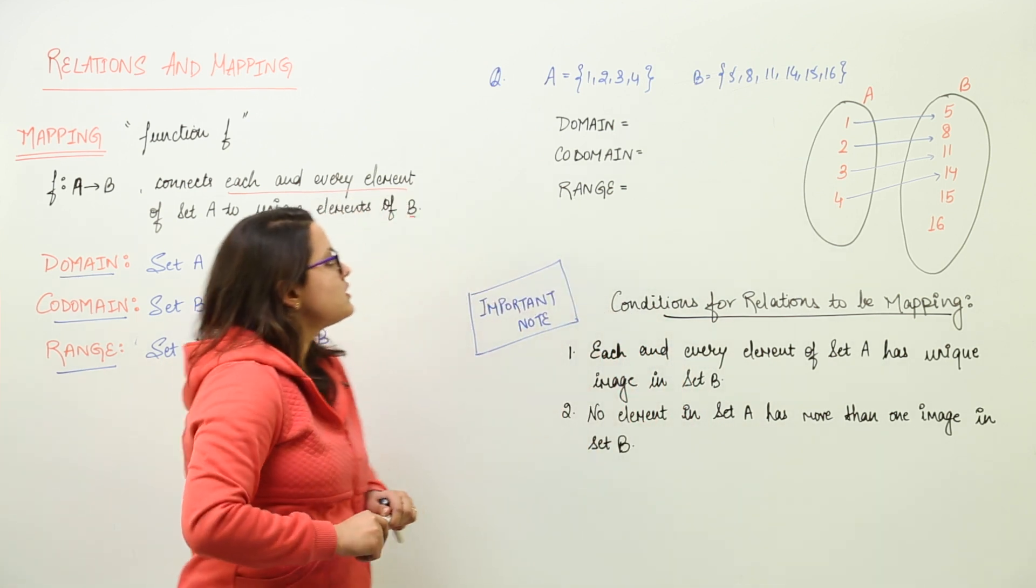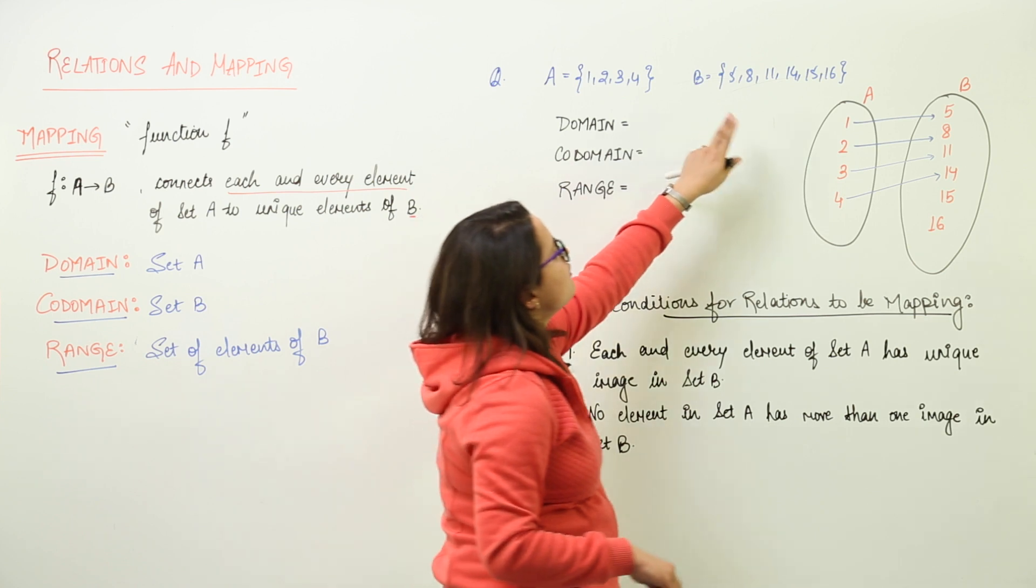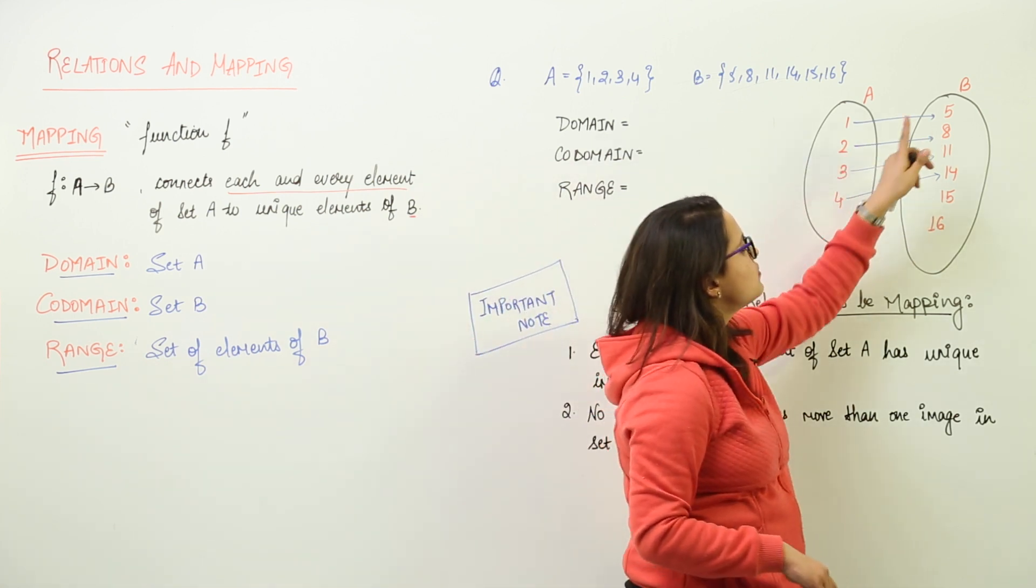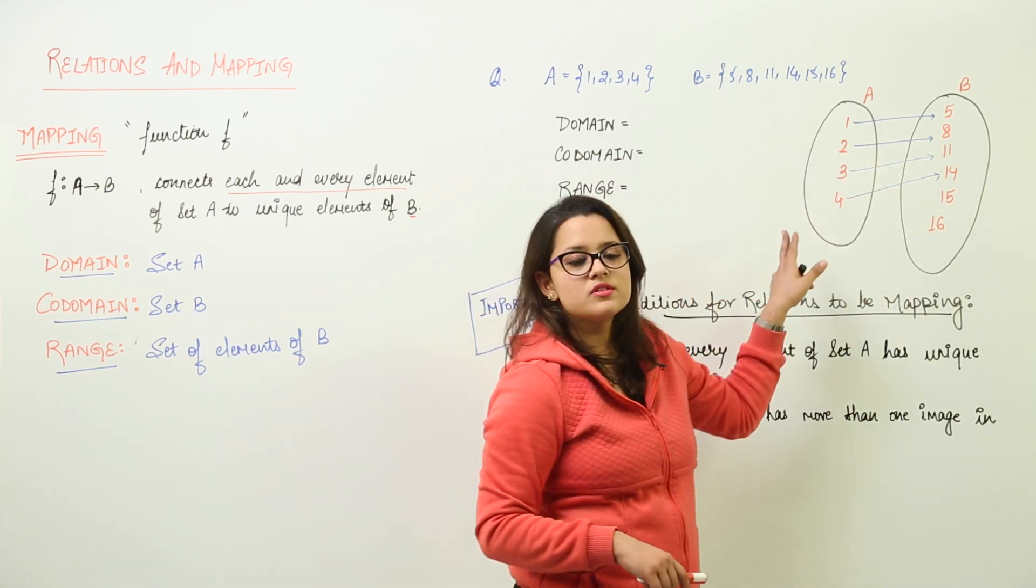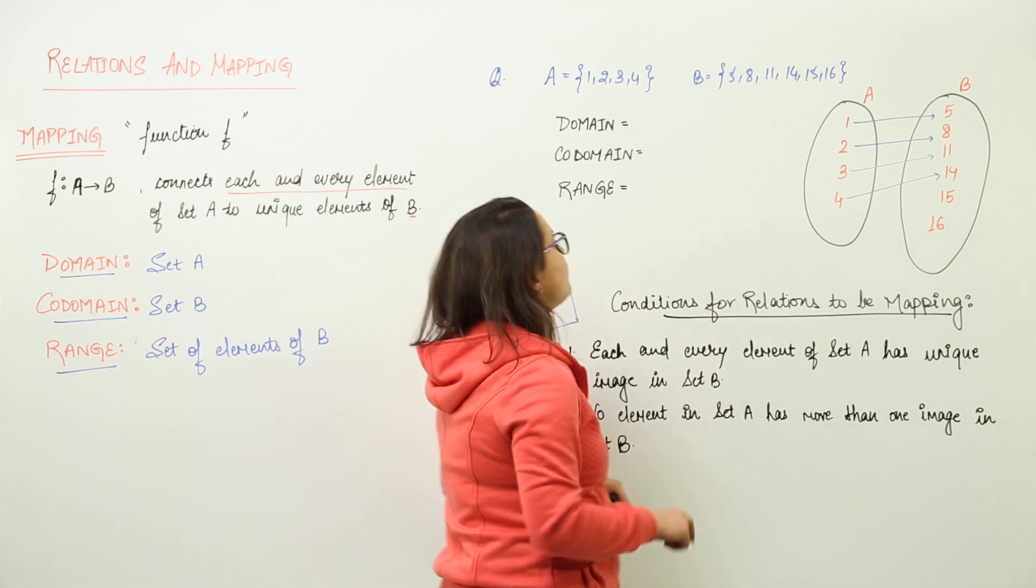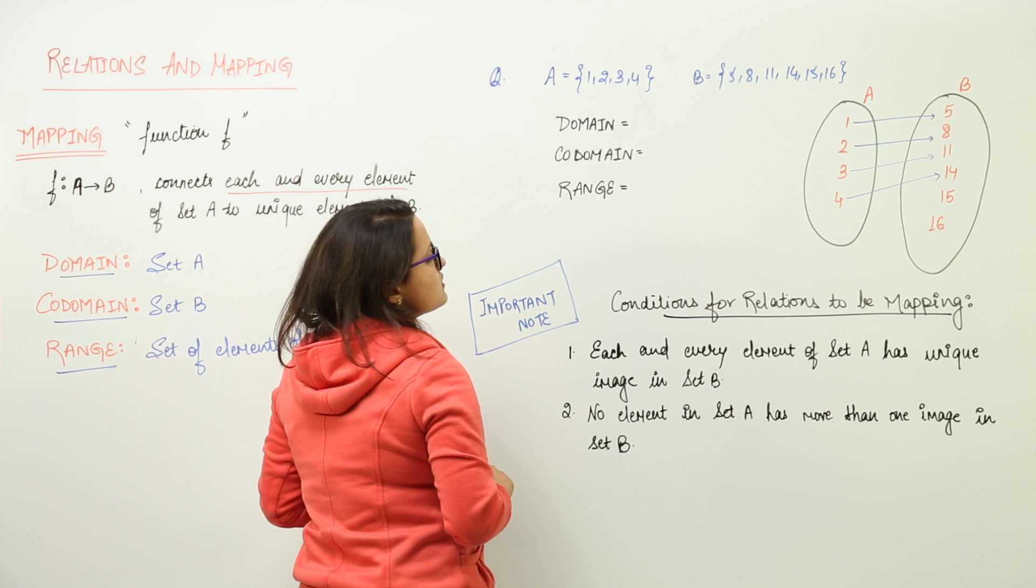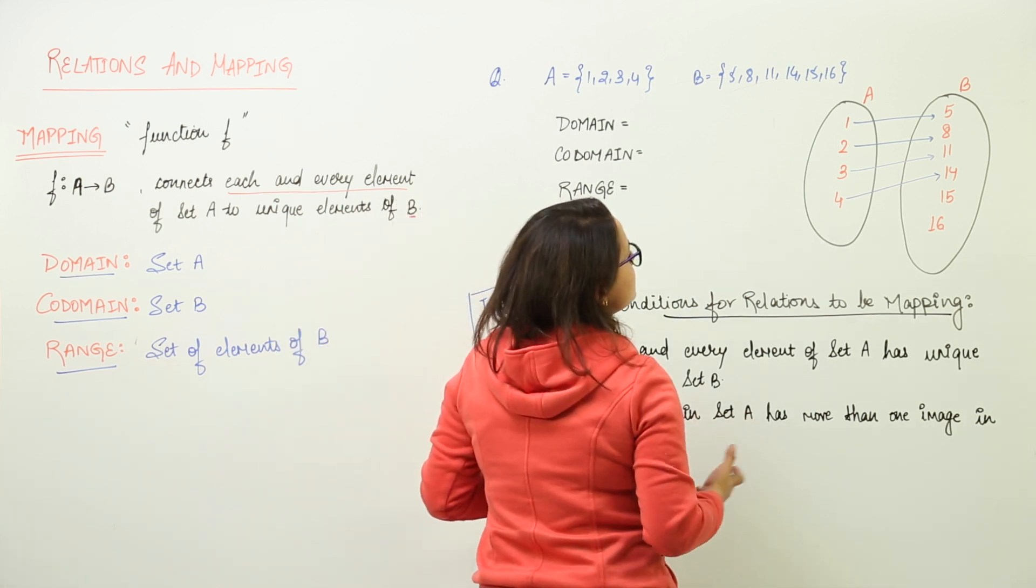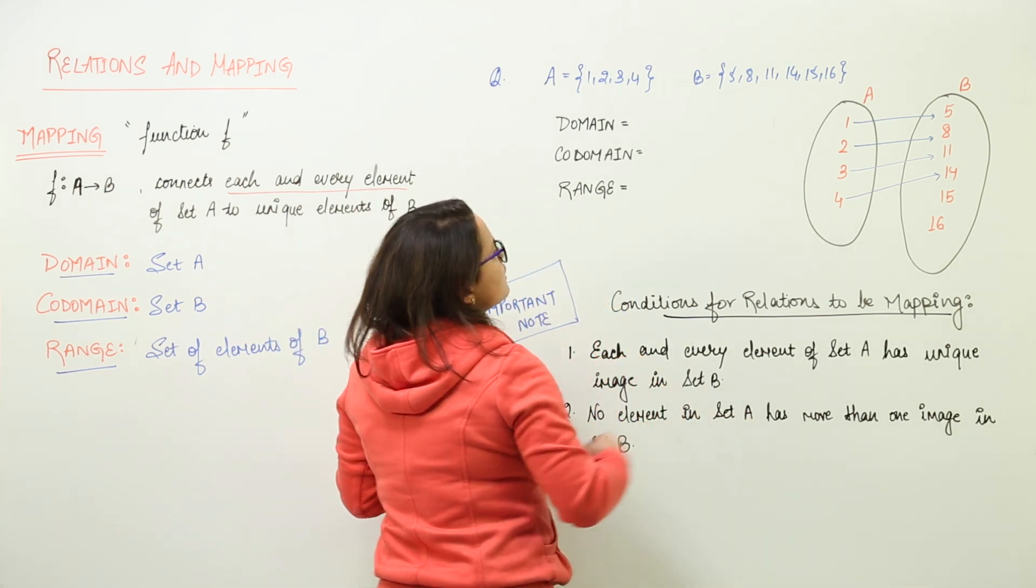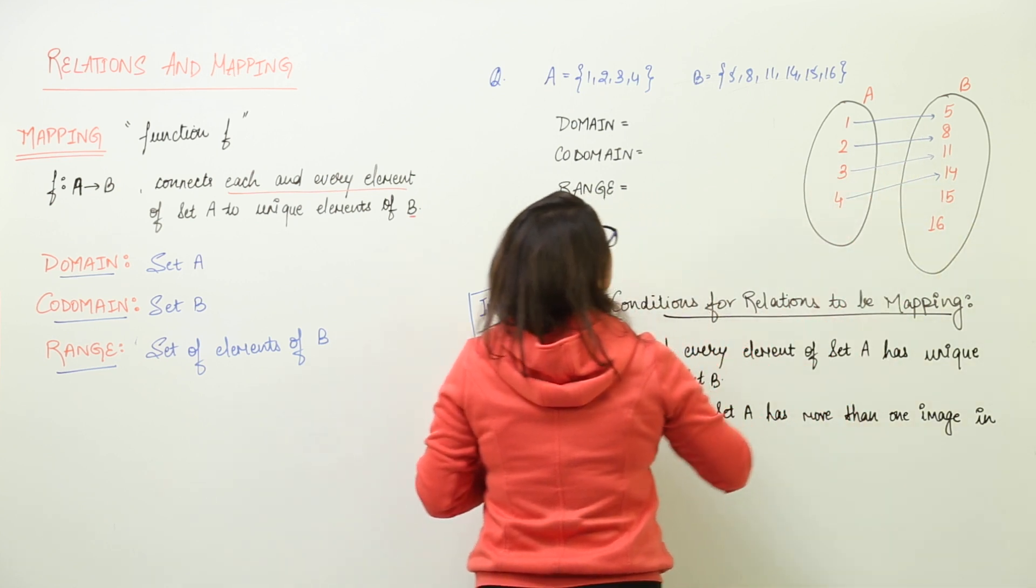Now, for this question, here I have taken set A, set P and represented them by using the arrow diagram. Now, this relation has been written. You have to tell me the co-domain, domain and range for this. How will you do this? You can take the values by the arrow diagrams.